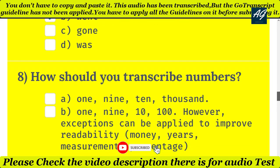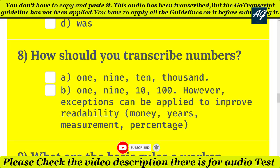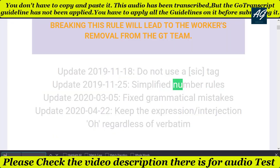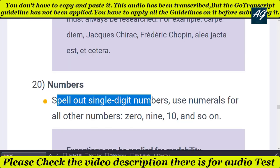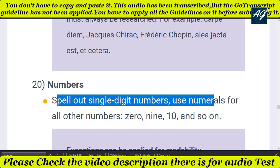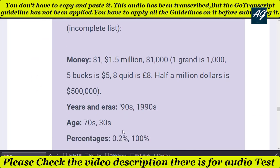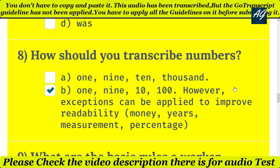The eighth question is: how should you transcribe numbers? There are two different options. The correct option is B — one through nine are spelled out, ten and above written as numerals — however, exceptions can be applied to improve readability for years, measurements, and percentages. If you read the transcription guideline section on numbers you will easily understand why this option is correct.